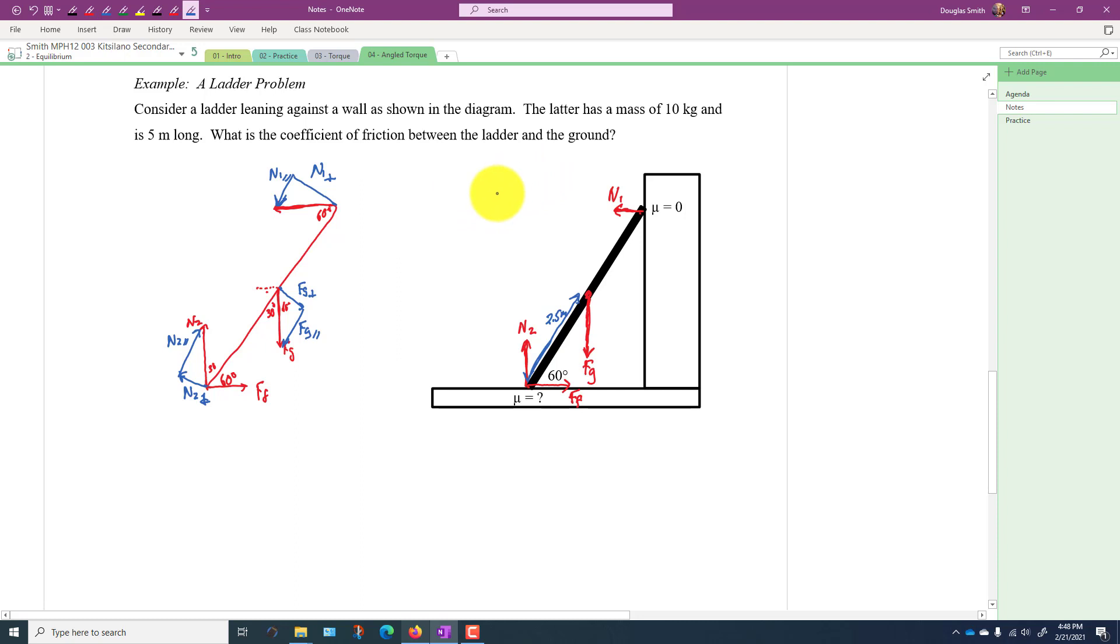So we now have our forces that we can calculate torque. I'm going to pick this as the point because it has two unknown forces on it. I'm going to pick that as the pivot point and then I don't have to worry about N2 and force of friction. So Fg parallel is making the torque go this way, N1 perpendicular is making it go that way.